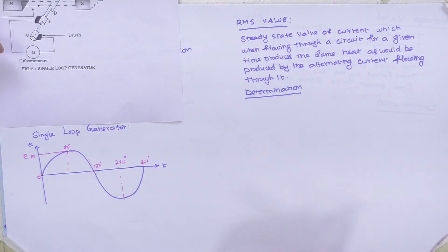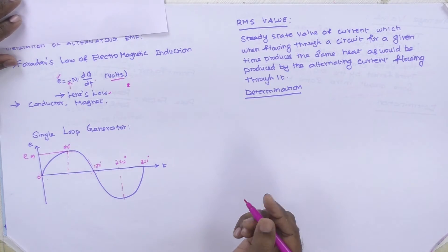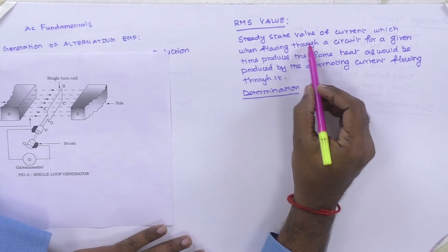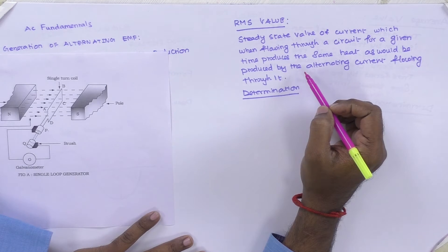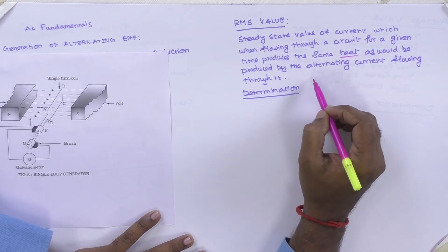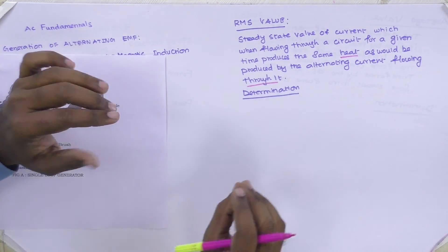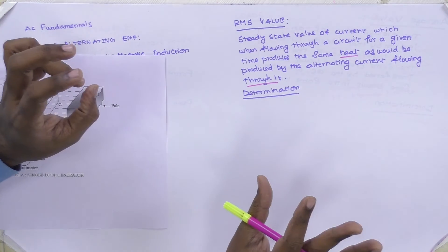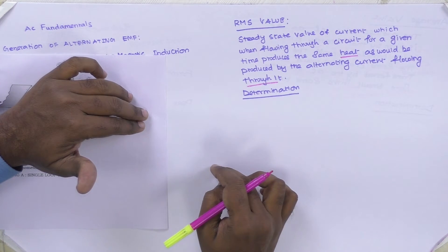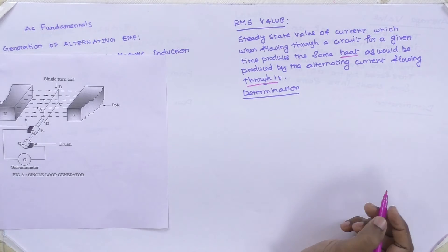Next, we see the indication parameters for alternating current or voltage: RMS value, average value, and peak value. The RMS value is the steady-state value of current which, when flowing through a circuit for a given time, produces the same amount of heat as would be produced by the alternating current. In DC it is a steady-state current, so the effective value is easy to define; but in AC it varies with time, so we find the effective (RMS) value. The RMS value is determined in two ways: graphical approach and analytical approach.